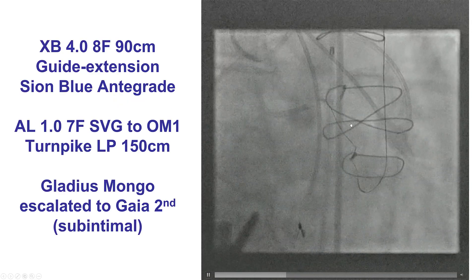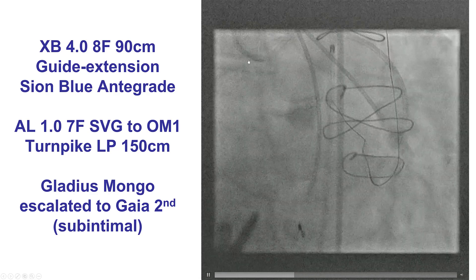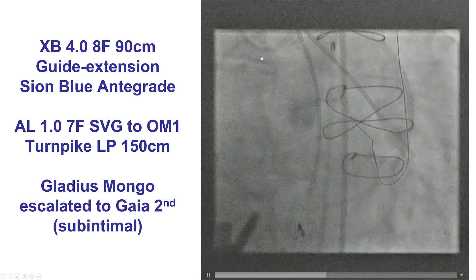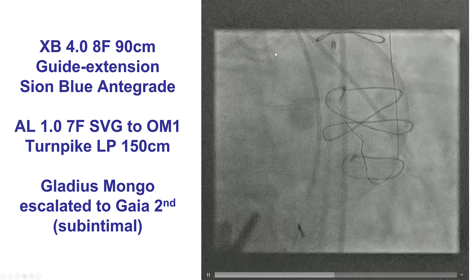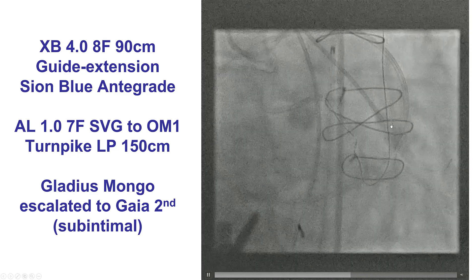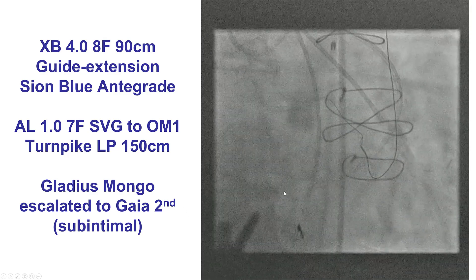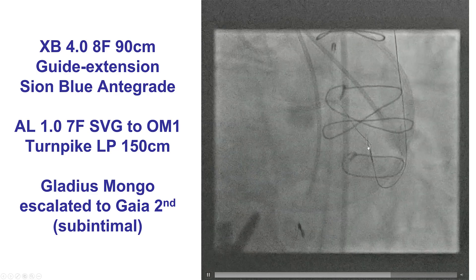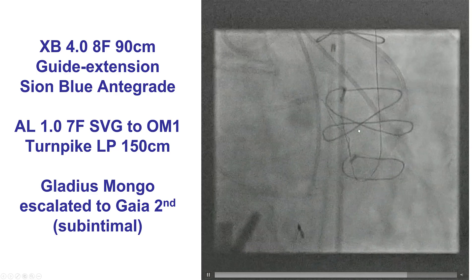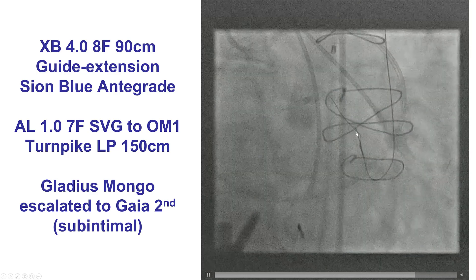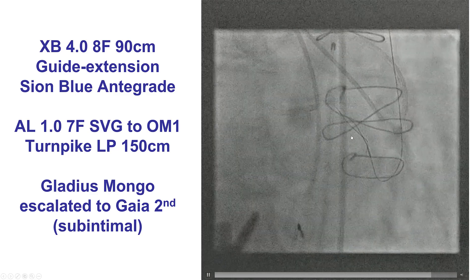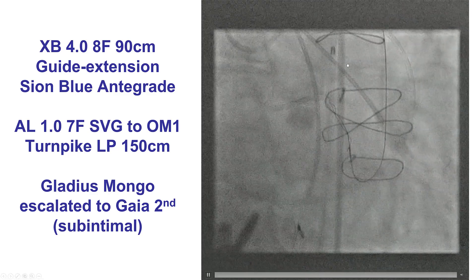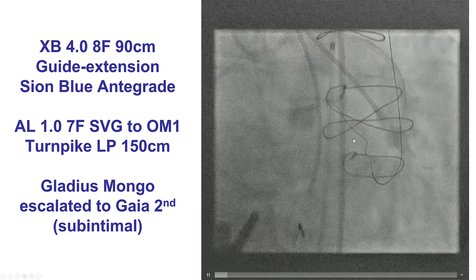The vein graft was engaged with an AL1 guide, which works very well for left-sided grafts. We used a guide extension, the TurnPike LP, and then a Mongo and Gaia second guidewire, and those guidewires did enter sub-intimally — or using the CTO arc technology terminology, extra-plaque — into the area of the occlusion.